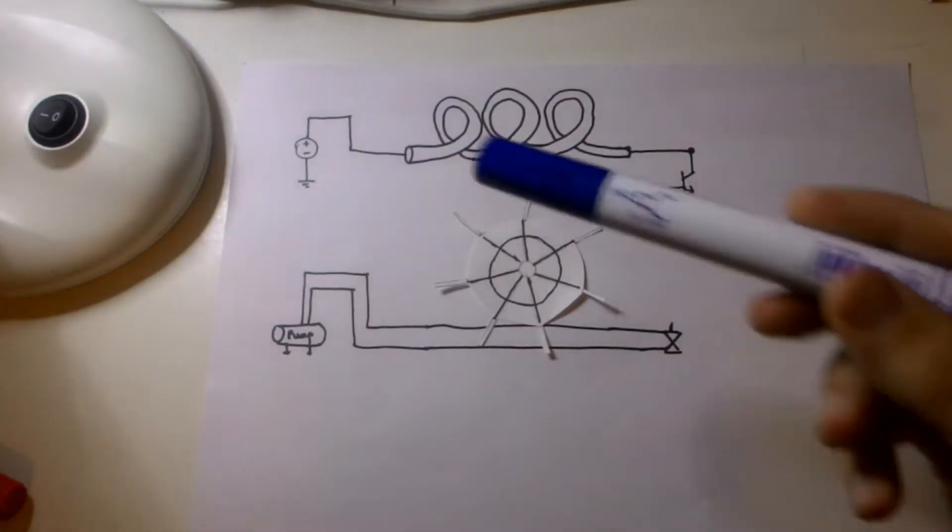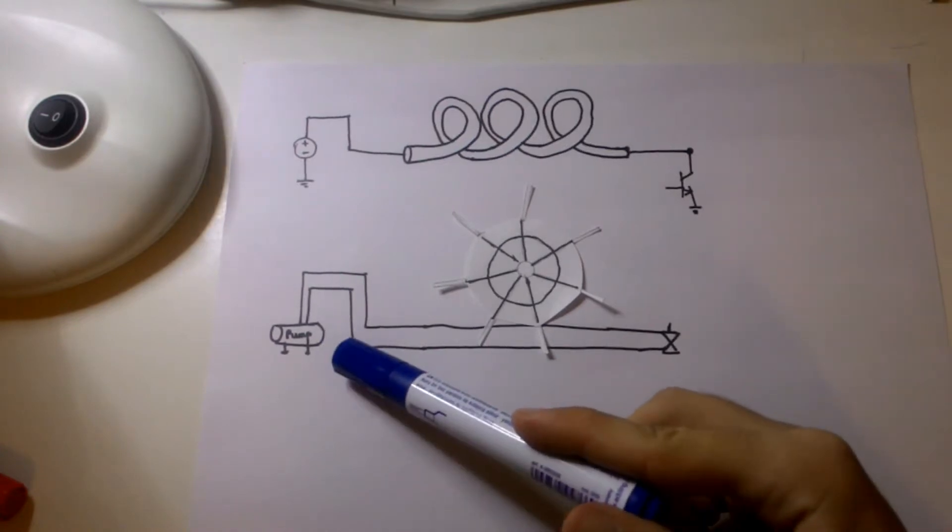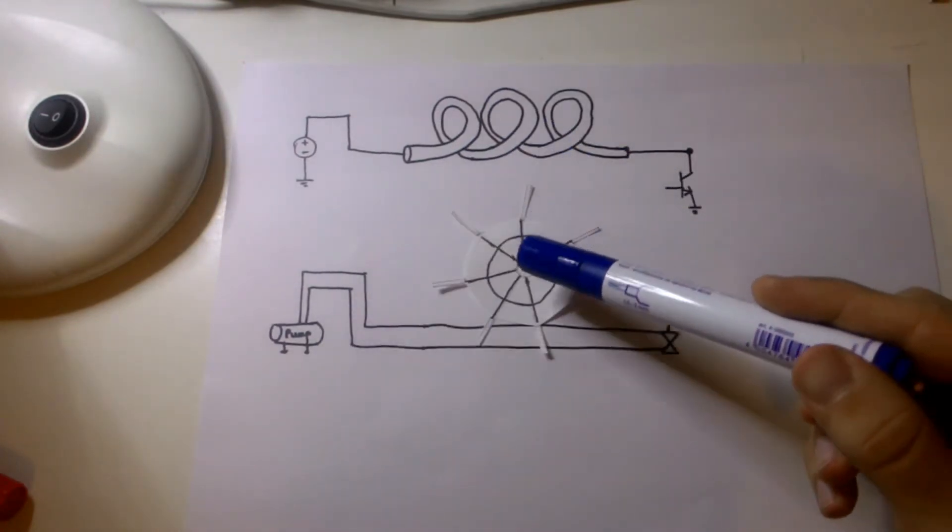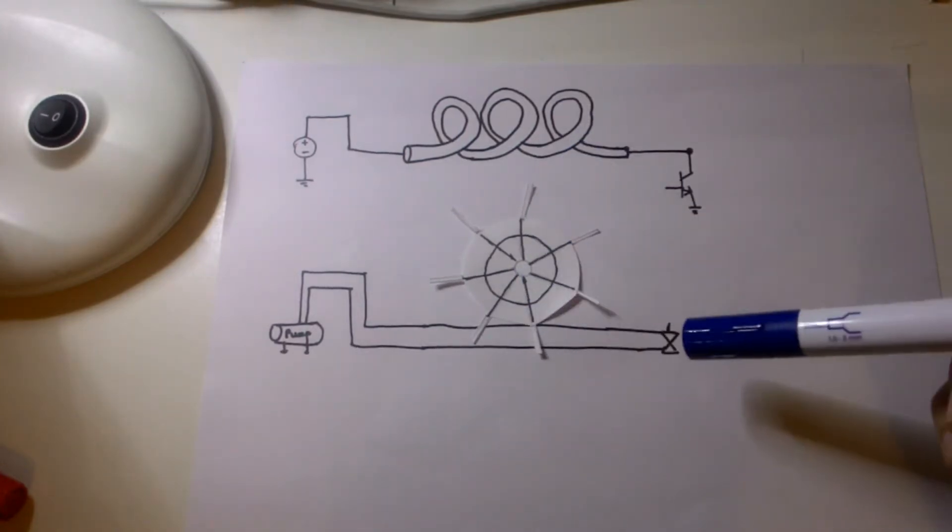And as my electric circuit's hydraulic counterparts, I have my pump and for an inductor, I have a water wheel here and for the switch, I have a valve. So okay, let's get started.